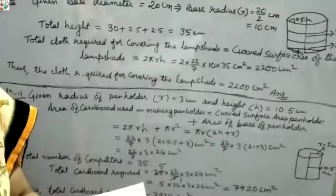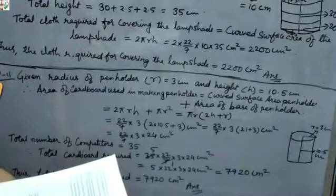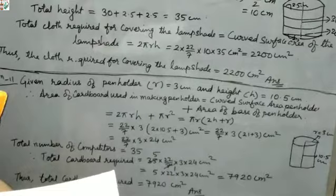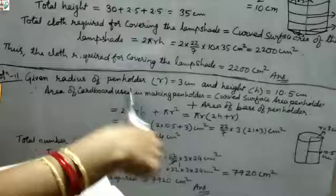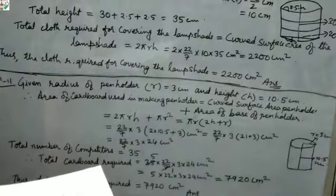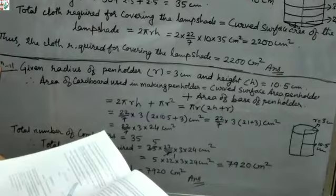Each pen holder has radius 3 cm and height 10.5 cm. The Vidyalaya supplies competitors with cardboard. We need to find how much cardboard is required for 35 competitors, since there are 35 competitors each making one pen holder.